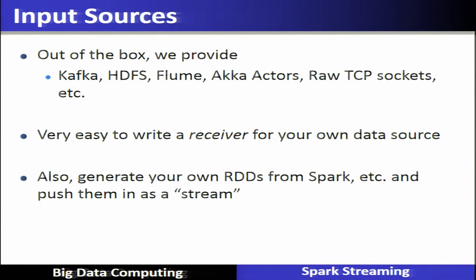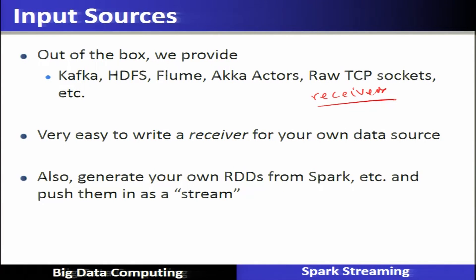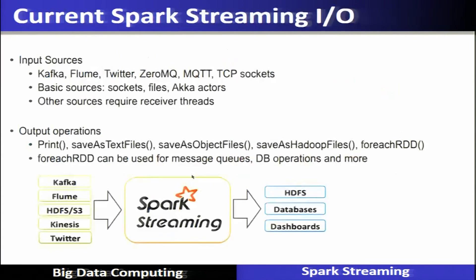Out-of-the-box input sources include Kafka, HDFS, Flume, Kinesis, Actors, RAW, and TCP sockets. It is also easy to write a receiver for your own data source. Current Spark streaming input sources include Kafka, Flume, Twitter, ZeroMQ, and basic sources like sockets, files, Kinesis, and actors. Output operations include print, saveAsTextFiles, saveAsObjectFiles, saveAsHadoopFiles, and forEach for each RDD, which can be used as a message queue and for DB operations.